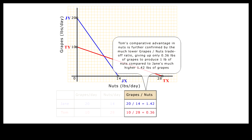We can also confirm that Tom has a comparative advantage in producing nuts in terms of grapes foregone by computing the grapes-to-nuts trade-off ratios for Jane and Tom. To do this, we divide the maximum grapes output by the maximum nuts output for each worker. For Tom, he has to give up only 0.36 units of grapes for each unit of nuts. But for Jane, she has to give up 1.42 units of grapes for each unit of nuts — that is almost 4 times as high as Tom.